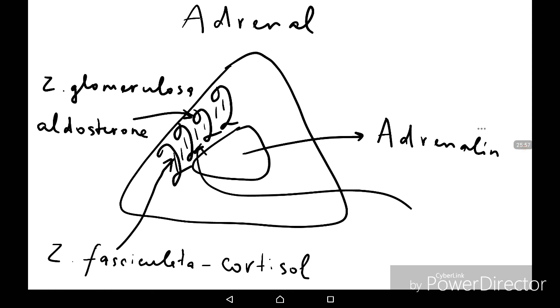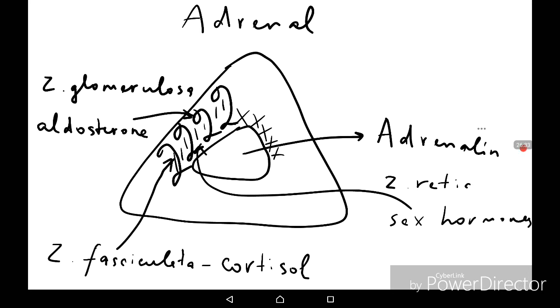The deepest layer of the adrenal cortex is the zona reticularis — it resembles a reticulum, like a net. The zona reticularis produces sex hormones, for example androgens. Soft androgens are also produced in the female organism in the adrenal cortex in the zona reticularis.